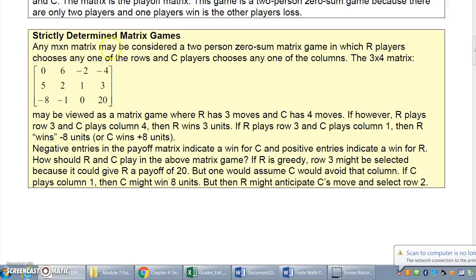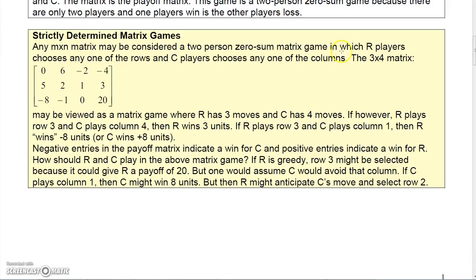In an n-by-n matrix, this is a two-person zero-sum matrix game where player R chooses any row and player C chooses any column. For example, in a three-by-four matrix, if R chose row two and C chose column four, then R earns three (gains three).